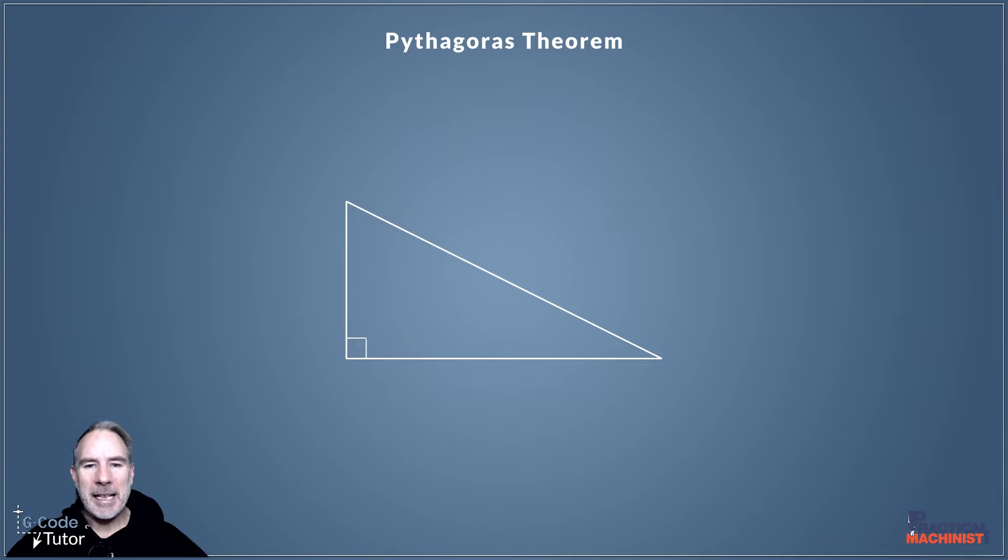Now I'm going to label each side here, so our shortest length here we're going to label A, our adjacent length we're going to label B, and our hypotenuse we're going to label C. So this is how we're going to work with this.